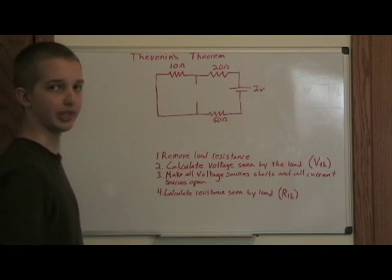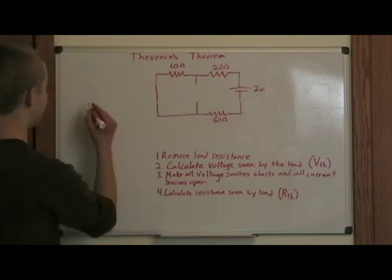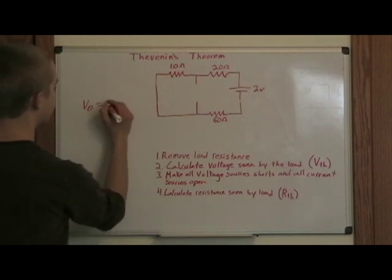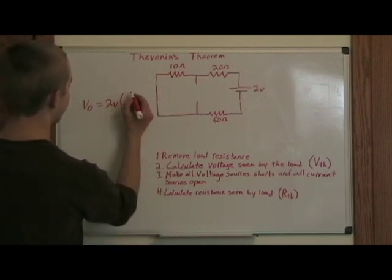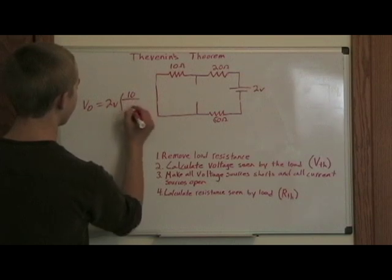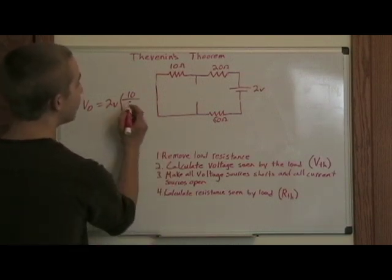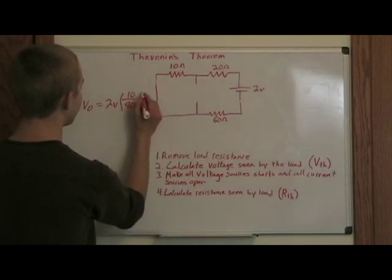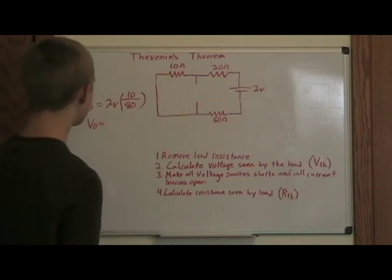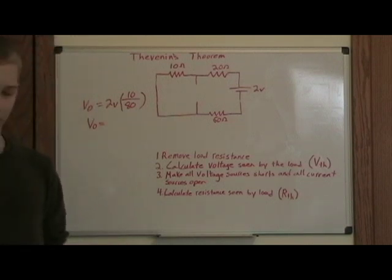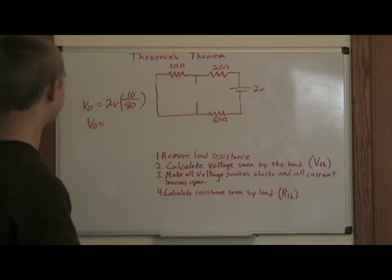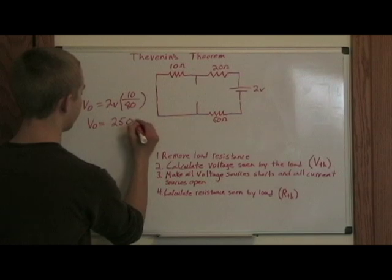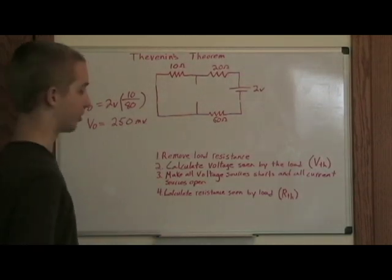And then we need to calculate the voltage across this resistor using that battery. So basically, we'll just use the same equation we used for the last problem, which is Vout equals 2 volts times R2, which we're saying is 10 ohms, over the total amount of resistance in the circuit, which is 80. That makes the voltage 250 millivolts, or 0.250 volts.